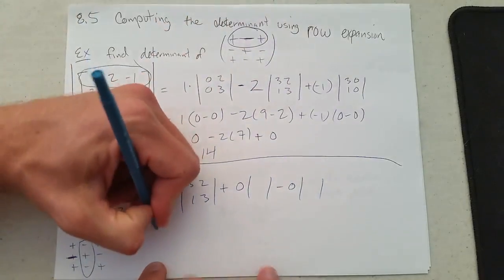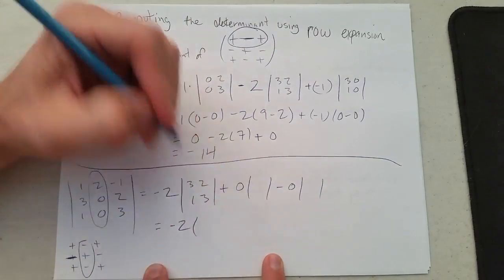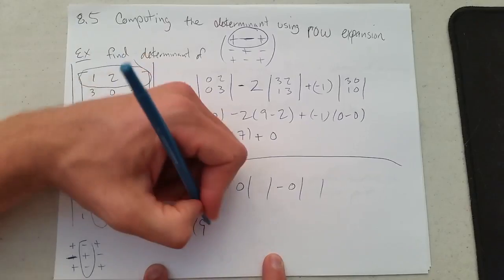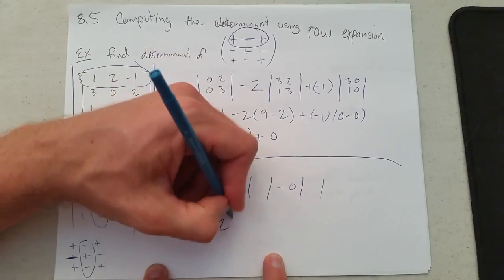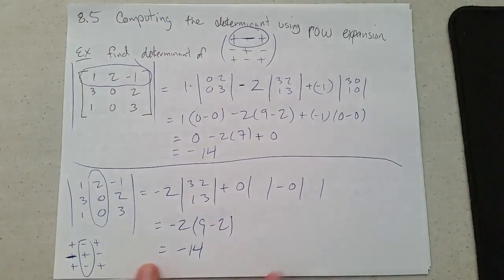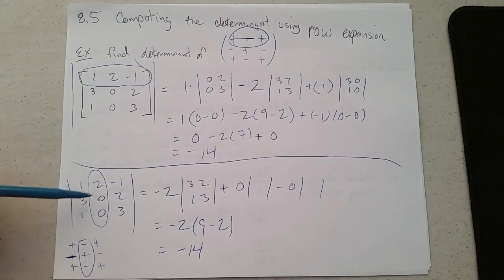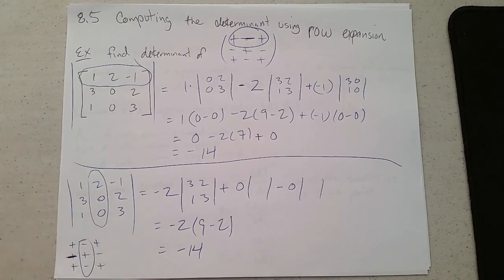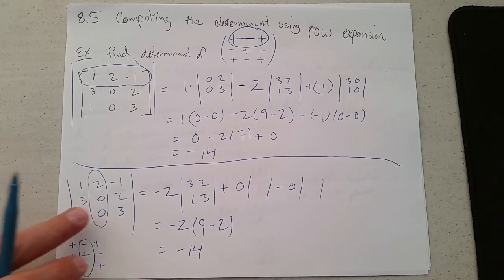So I really only have to worry about the first one. So 3 times 3 is 9, 2 times 1 is 2, 9 minus 2, that's 7 times negative 2, negative 14. So if you are a little bit more careful about what row or column you expand across, you can save a lot of time.